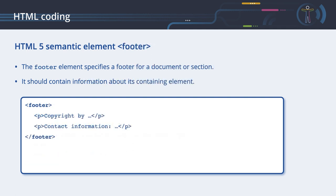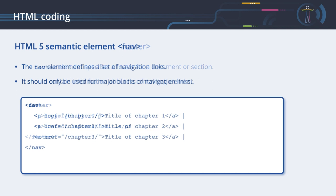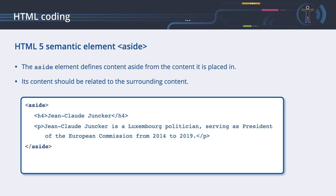The footer element specifies a footer for a document or section. It should contain information about its containing element — typically the author of the document, copyright information, links to terms of use, contact information, etc. The nav element defines a set of navigation links and should only be used for major blocks of navigation links. The aside element defines content aside from the content it is placed in, like a sidebar, and its content should be related to the surrounding content.